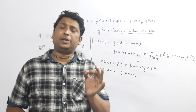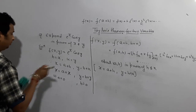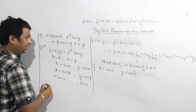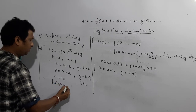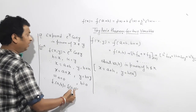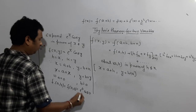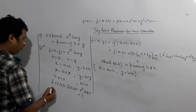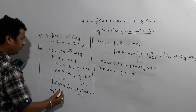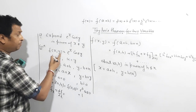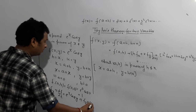The second step is to find partial derivatives and evaluate at the point. We need f at (a, b), which is f(0,0) = e^0 · cos 0 = 1. Next, fx = ∂/∂x (e^x cos y) = e^x cos y, so fx at (0,0) = 1.